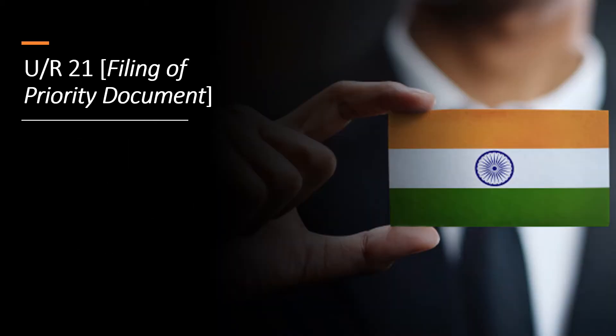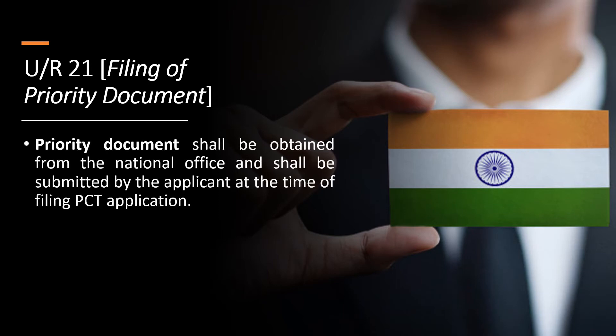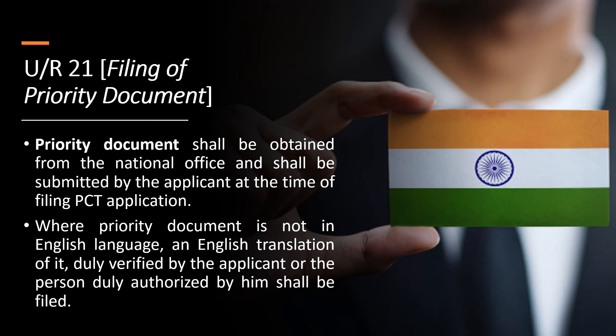Under Rule 21, Filing of Priority Document, the priority document shall be obtained from the national office and shall be submitted by the applicant at the time of filing the PCT application. Where the priority document is not in English, an English translation of it, duly verified by the applicant or a person duly authorized by him, shall be filed.